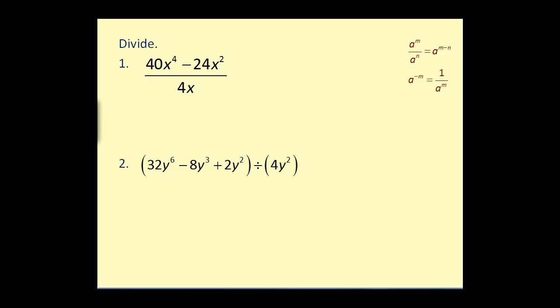So let's go ahead and give it a try. Over here on the right, I have provided the quotient rule for exponents. So we're dividing by the monomial four x, which means we can rewrite this as forty x to the fourth over the monomial four x minus twenty-four x squared over four x.